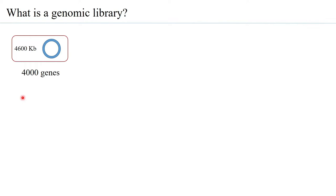So effectively, a library is basically a consortium of knowledge stored in the form of books, and you can select a book for your reading. Similarly, if there are 4000 genes, those 4000 genes form a library from which you can select the gene of your choice. Analogous to a library, a genomic library is a collection of DNA of a single organism, and for every organism a genomic library can be prepared.